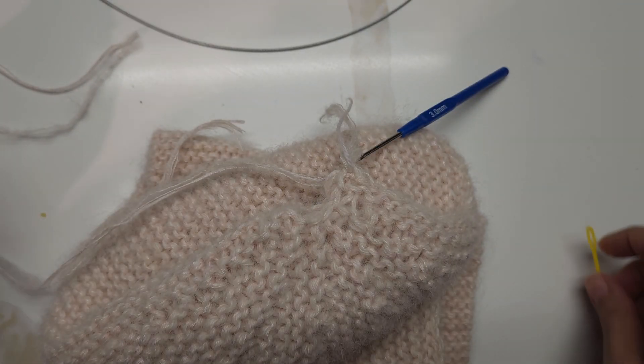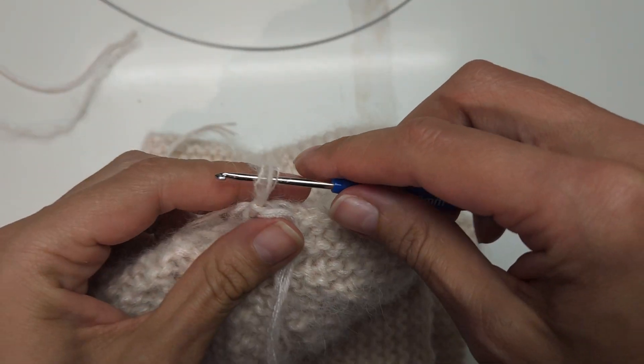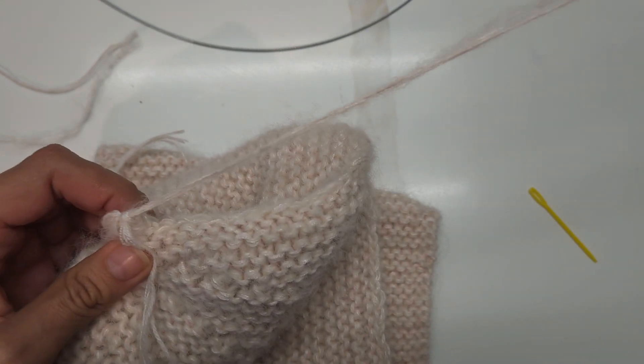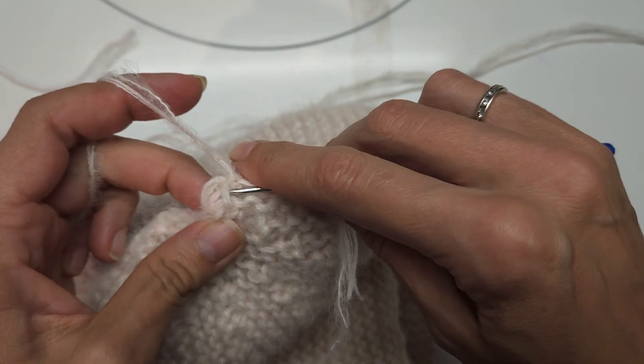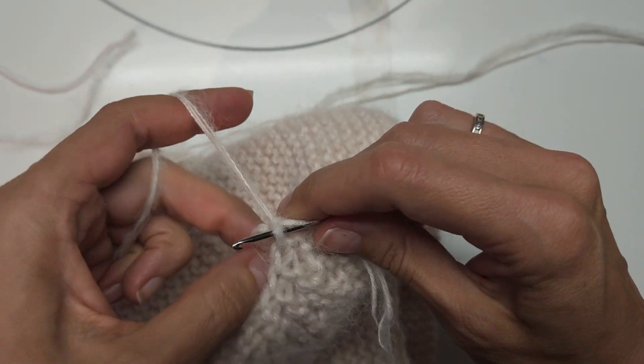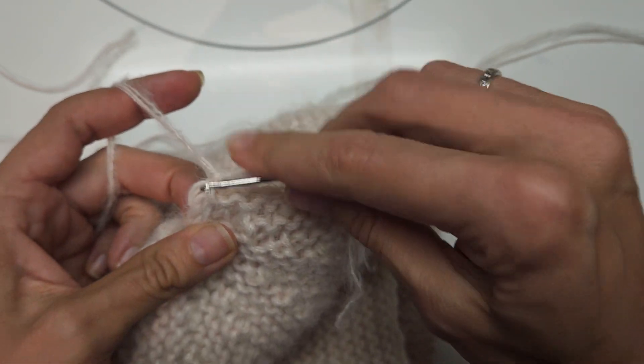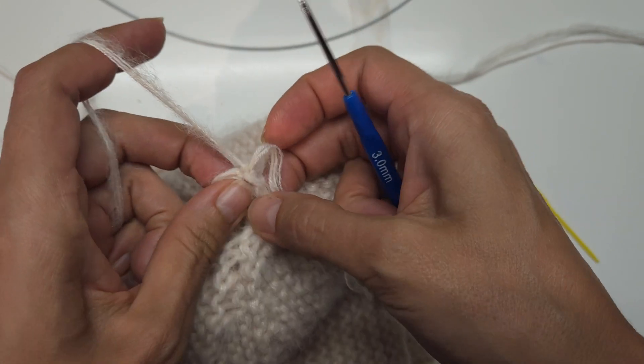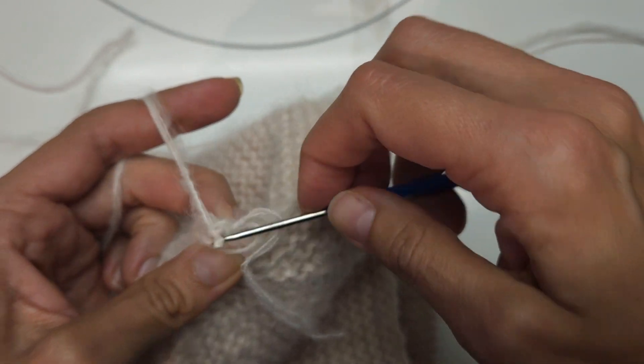So now I'm just taking the tapestry needle, but first I need to finish here and just pull this tail through those last stitches. Then fix it by just making another extra knot.